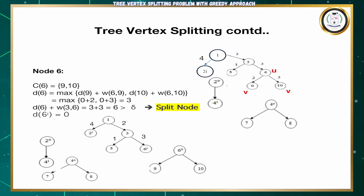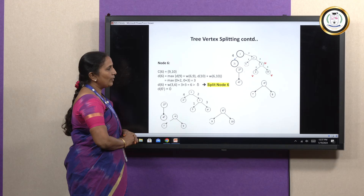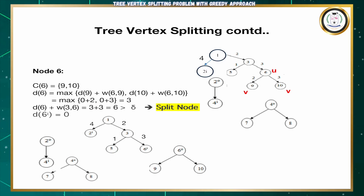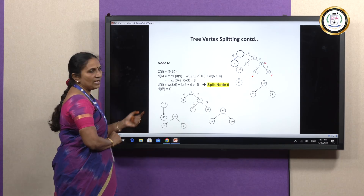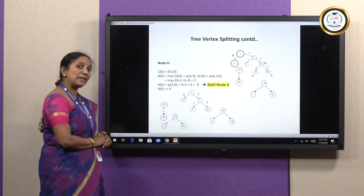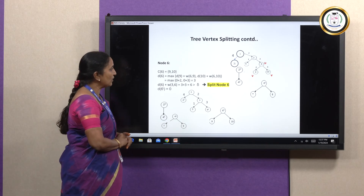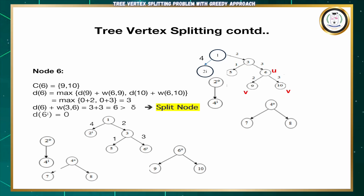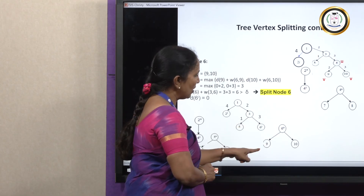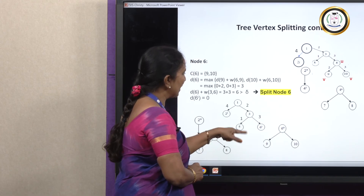Now we will come to the right-hand side. We need to check for node 6. Node 6 has two child nodes: node 9 and node 10. Applying the same formula: D(9) = 0 plus weight from node 6 to node 9 = 2, giving 2; or D(10) = 0 plus weight from node 6 to node 10 = 3, giving 3. The maximum among 2 and 3 is 3. So the delay for node 6 is 3. We need to see whether we are going to split this node: delay of node 6 plus weight to its parent = 3 + 3 = 6, which is greater than delta = 5. So we need to split node 6 as well. After splitting node 6, from 6-out-node we get node 9 and node 10, and from node 6i we get the remaining vertices.